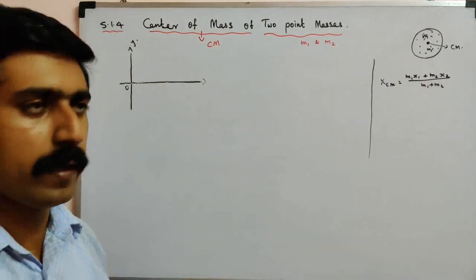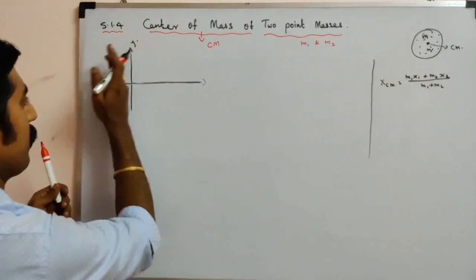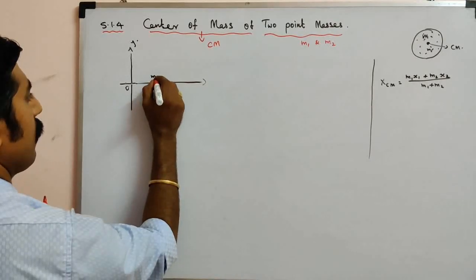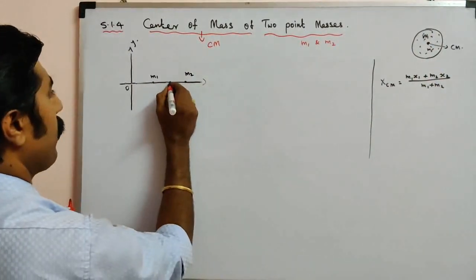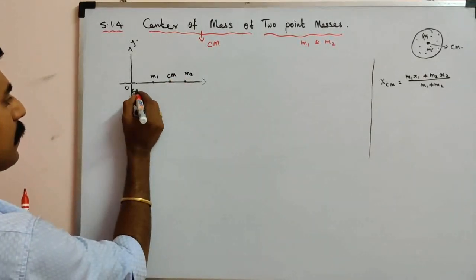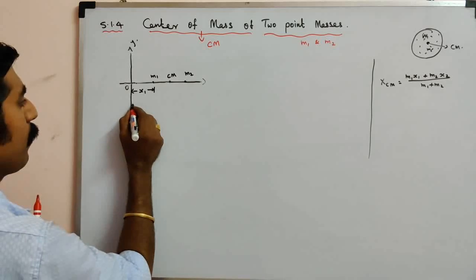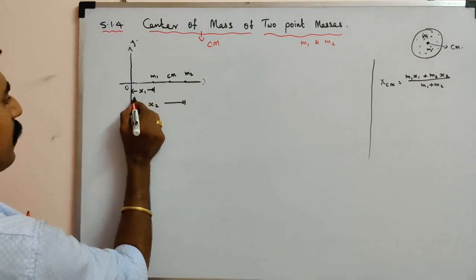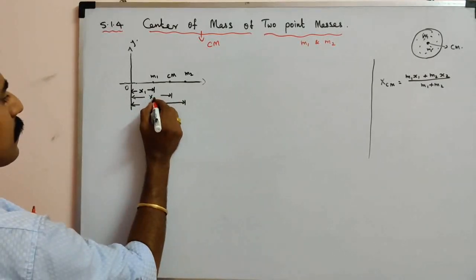We fix the origin, which is the starting point of both the x-axis and y-axis. The origin is arbitrary — it can be chosen separately. On the x-axis there are two point masses: the first point mass M1 and this is M2. In between the two point masses is the midpoint, which is the center of mass, CM.